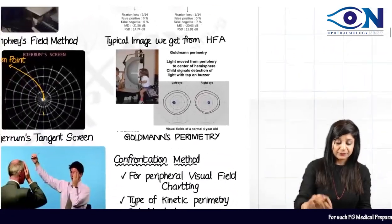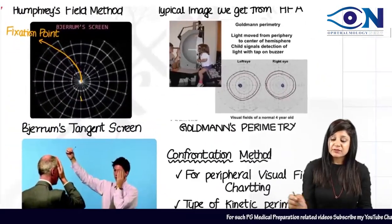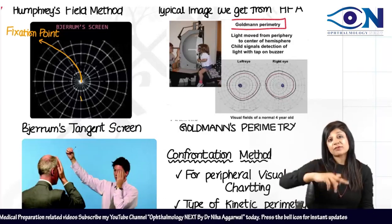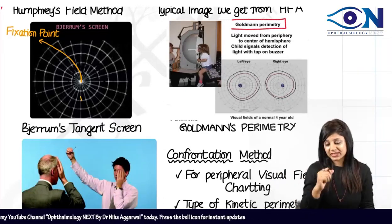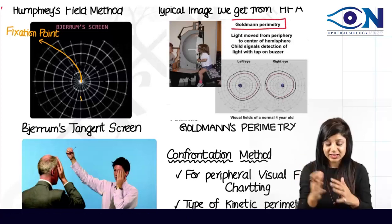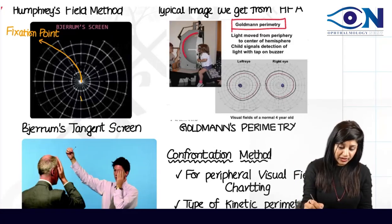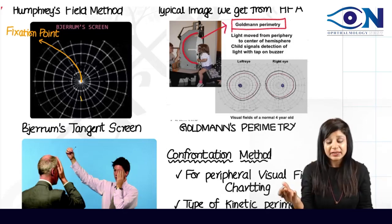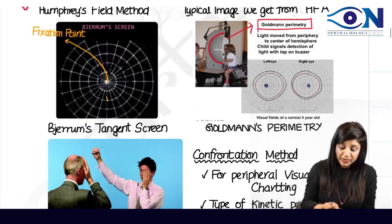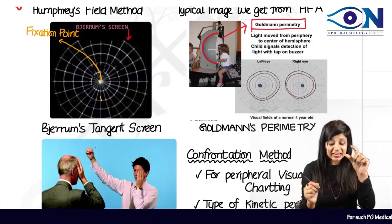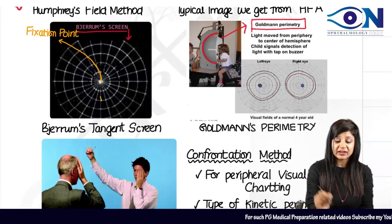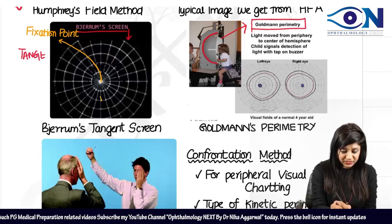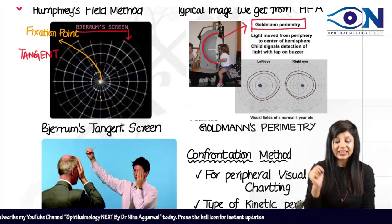Other perimetry methods include Goldman's perimetry and also the Goldman applanation tonometer — both discovered by Goldman. Another method is the Bjerrum's tangent screen, also called the Bjerrum screen or tangent screen, where a screen is displayed to the patient.